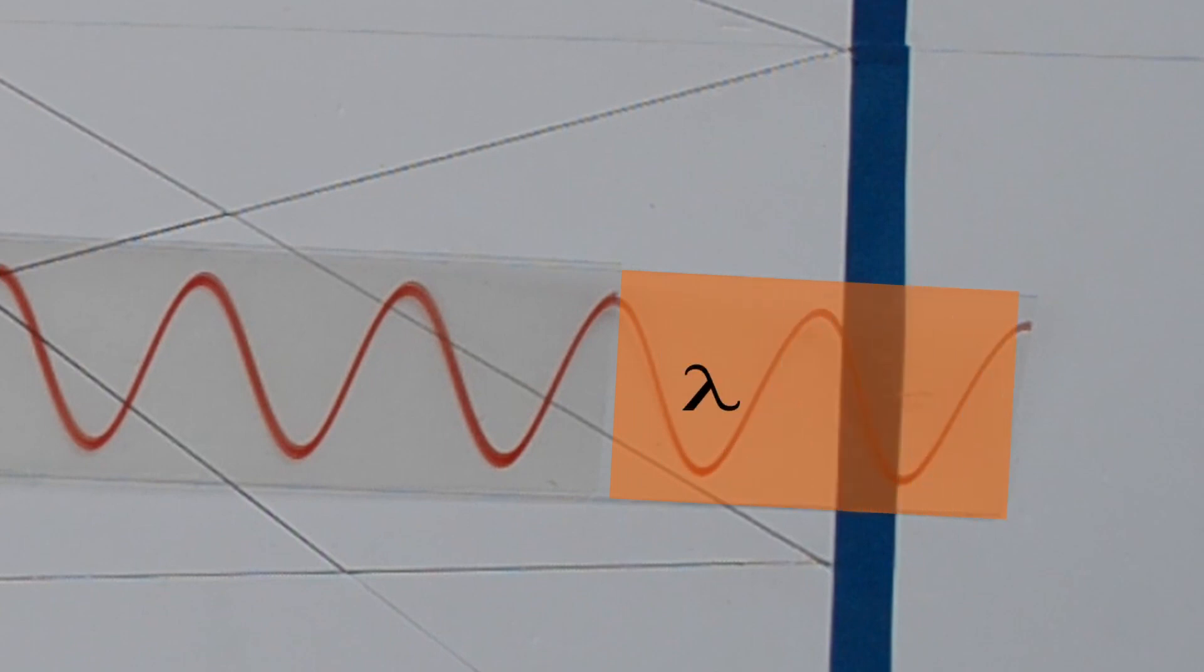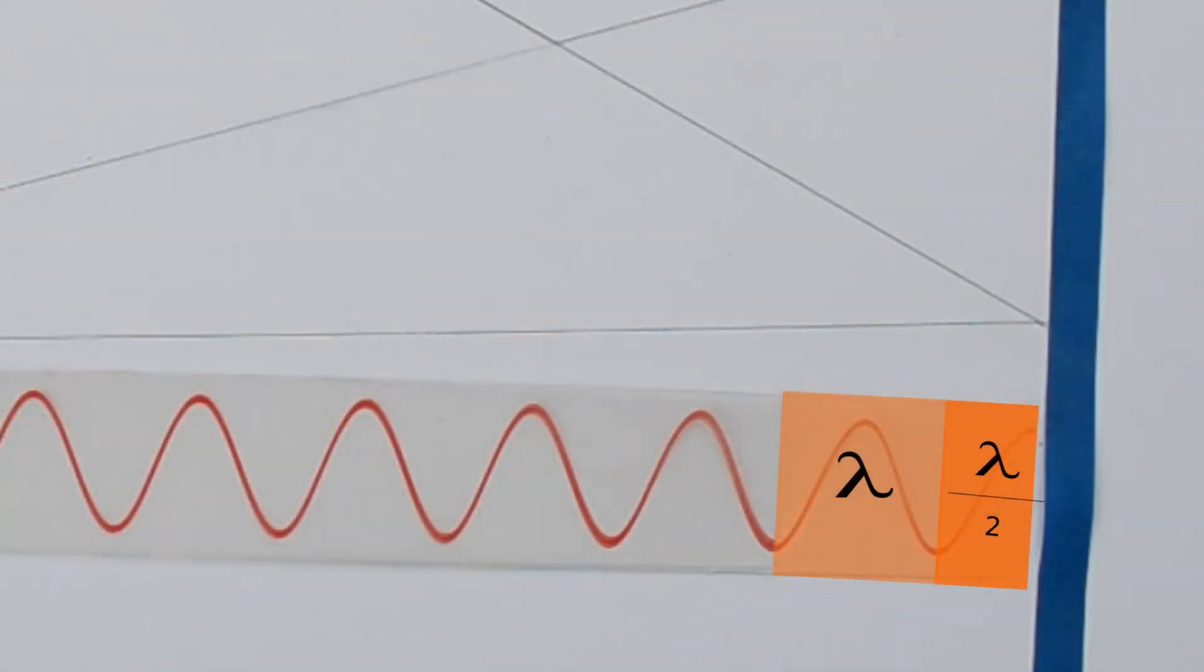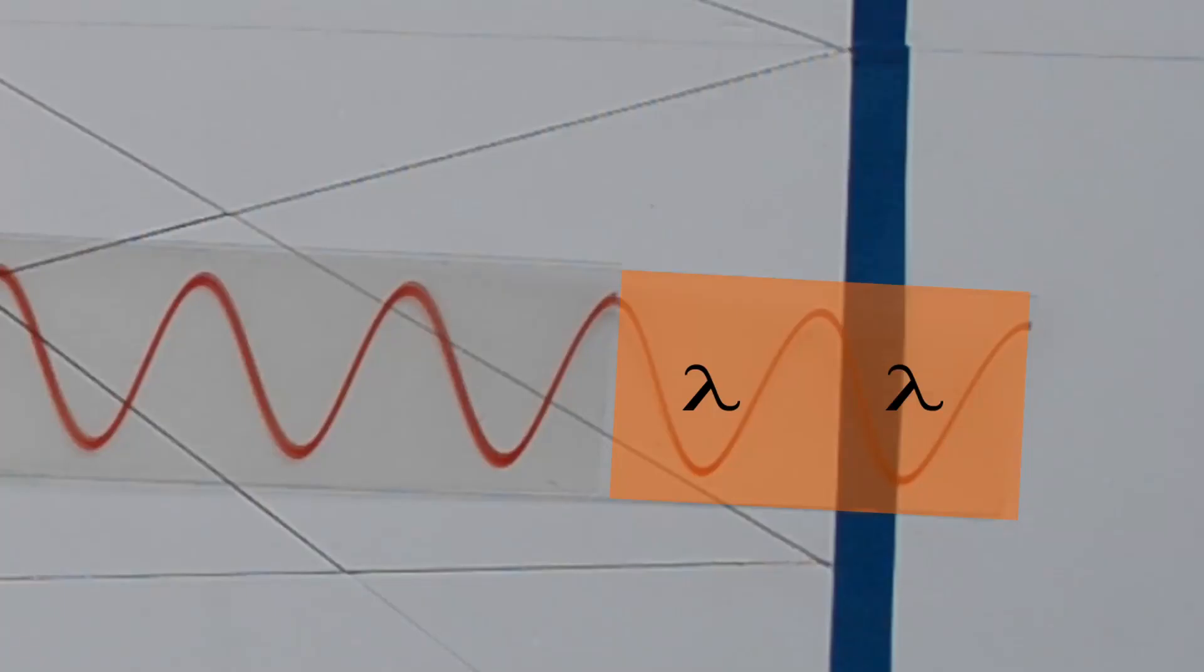We can say that when the path difference is in multiples of lambda by 2, there will be destructive interference. When it will be in multiples of wavelength, there will be constructive interference.